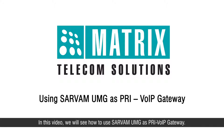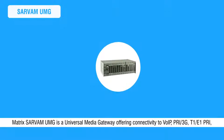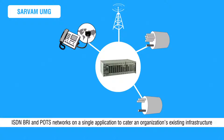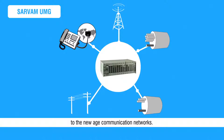Hello friends. In this video we will see how to use Servum UMG as a PRI VoIP Gateway. Matrix Servum UMG is a universal media gateway offering connectivity to VoIP, PRI, 3G, T1E1, ISDN and POTS networks on a single application to cater an organization's existing infrastructure to new age communication networks.